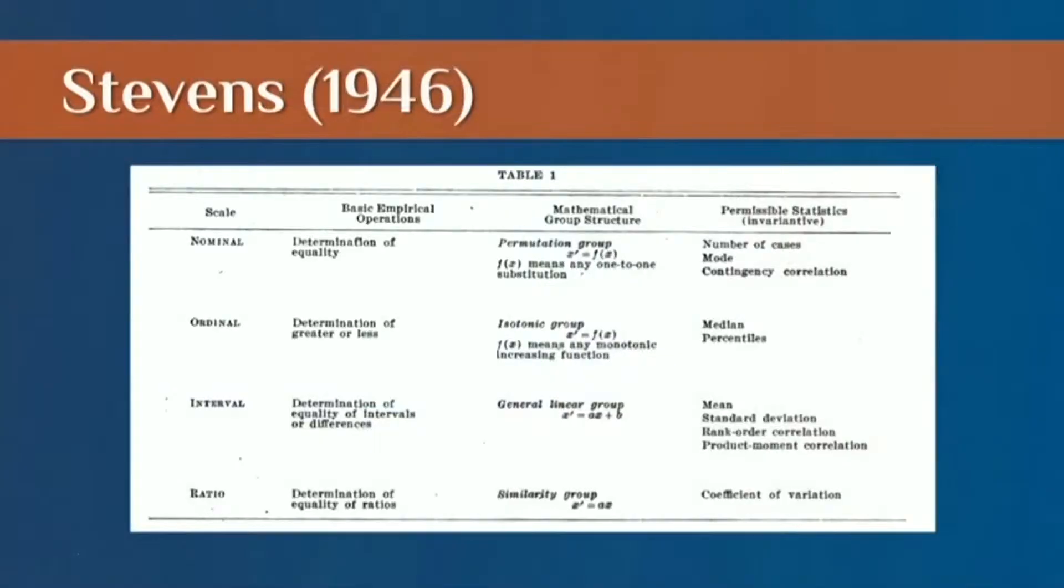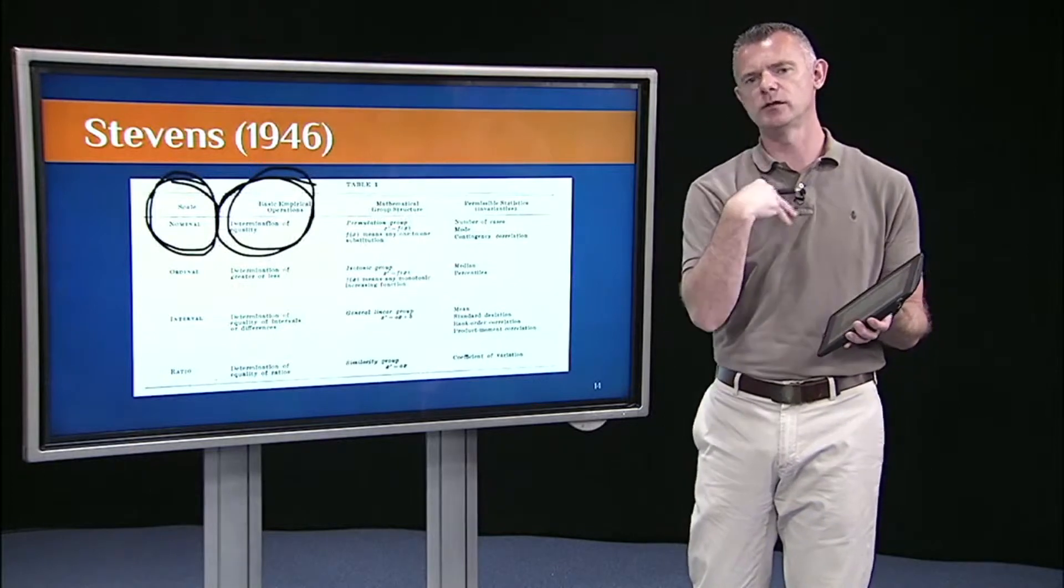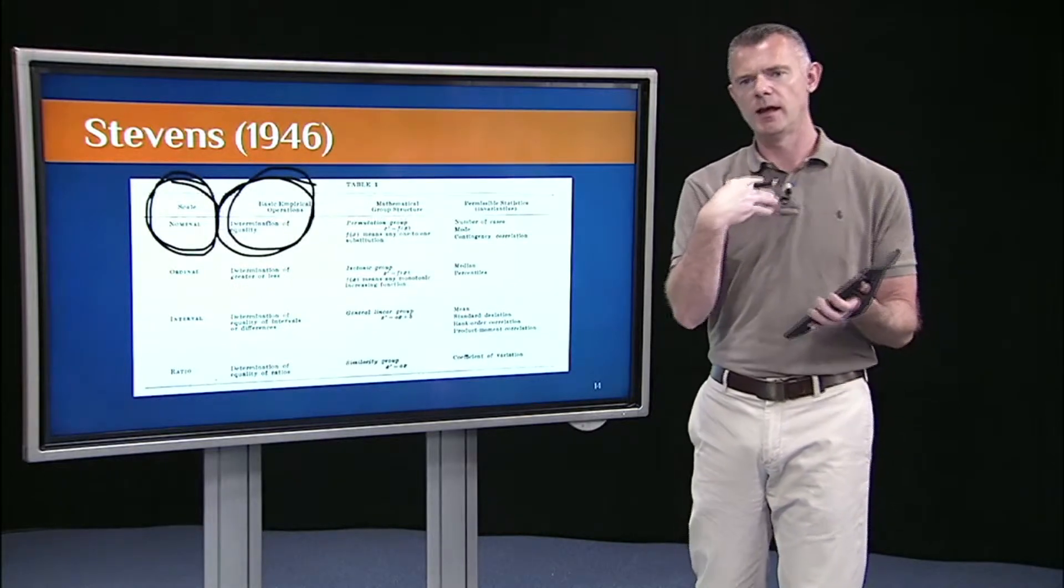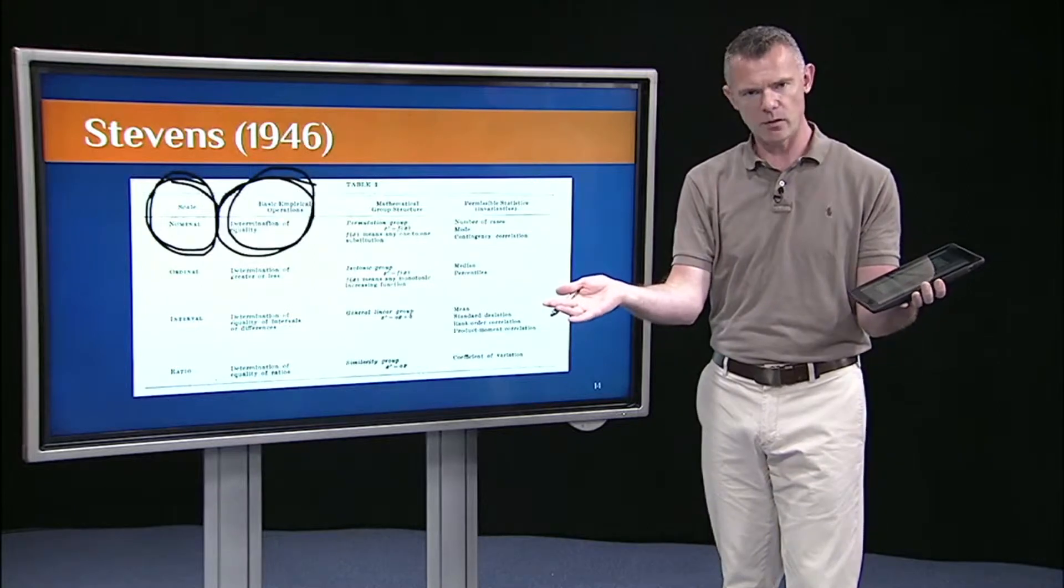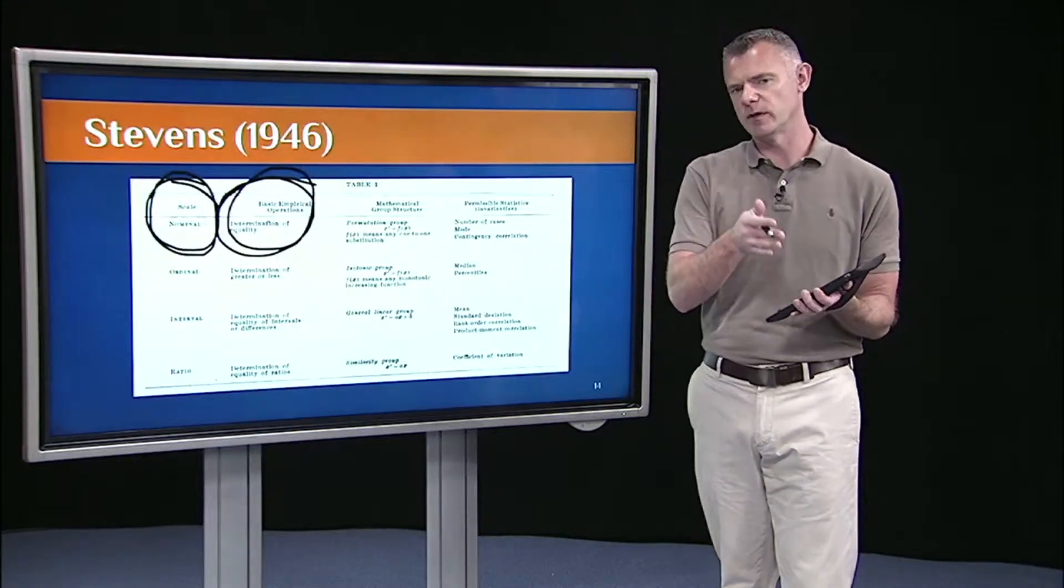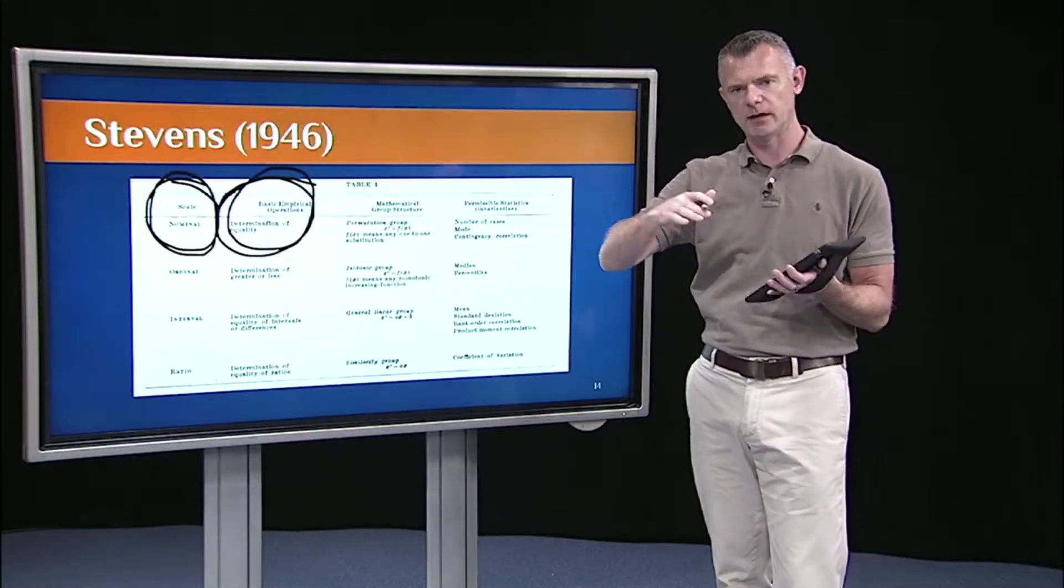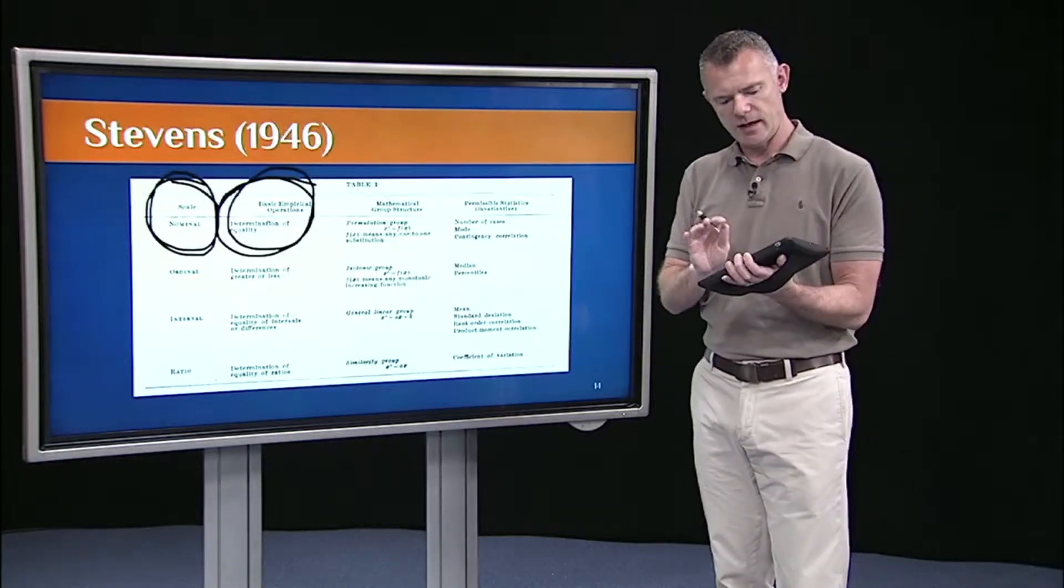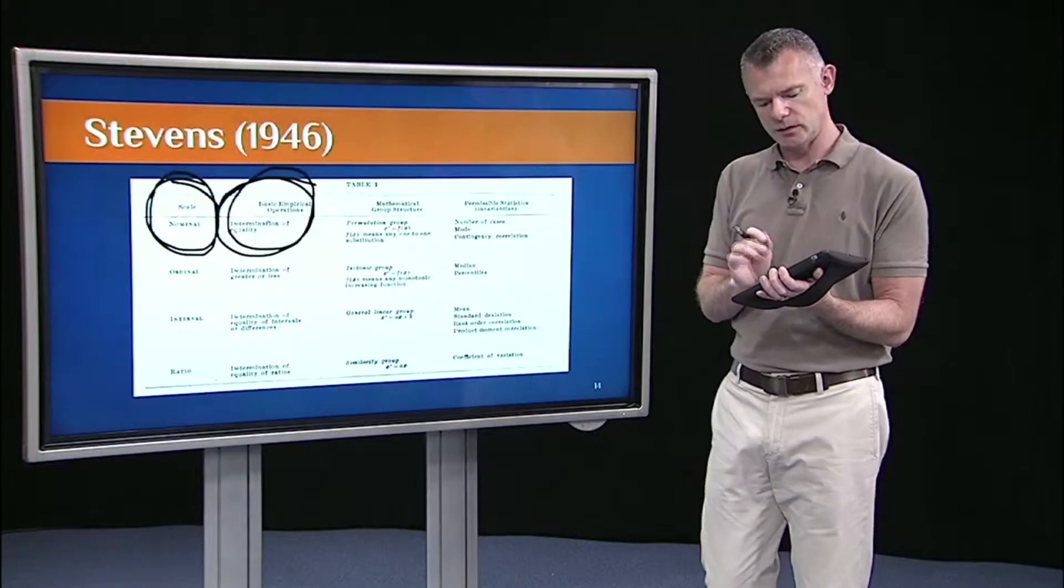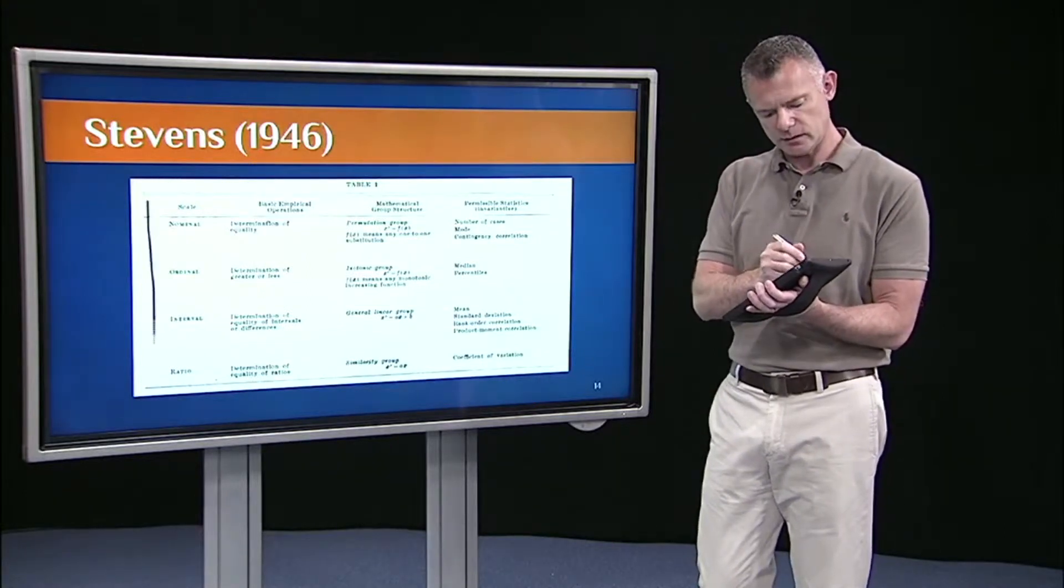The point is that a variable of type, say nominal, only allows us to do certain things. It only allows me to say are two entities equal or not equal. Are you from the same country or different countries? If I take two students at random from this course and I just know this nominal variable country of origin, all I can do is say are you from the same country or are you from a different country. I can't say anything about greater than or less than. I can just say are you from the same or different? That's all nominal variables allow us to do.